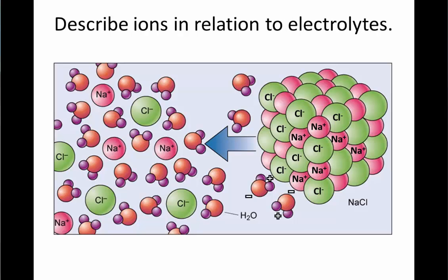To describe ions in relation to electrolytes, this concept can be tricky just because it's very similar to different words meaning the same things. When we have sodium chloride, when we have the compound sodium chloride, we talked about the sodium ions and the chloride ions. Electrolytes are ions, or what we call ions, when they dissolve in water.